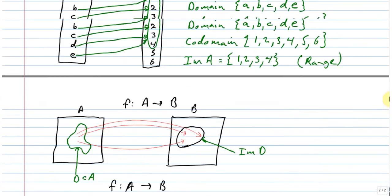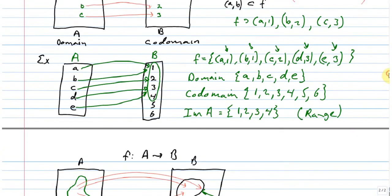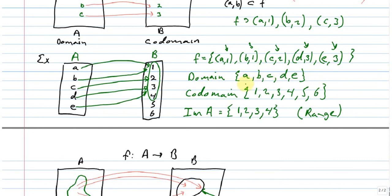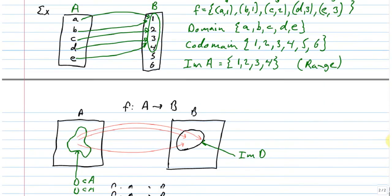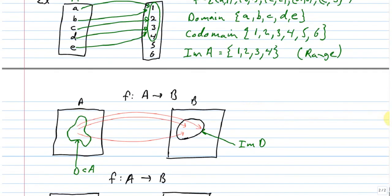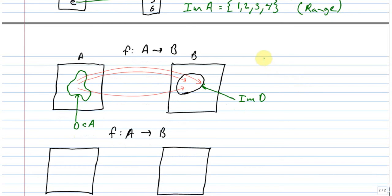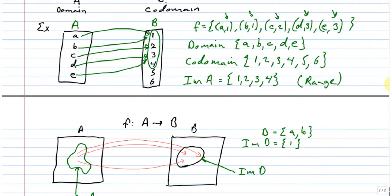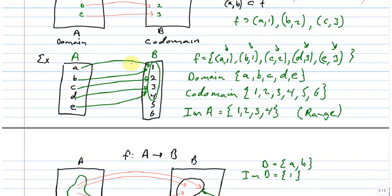So in our prior example, if I picked D to be the set {a, b}, then the image of D would just be {1}. So if D is equal to the set {a, b}, then the image of D is equal to just the set {1}, because here in this example, A maps to 1 and B maps to 1.